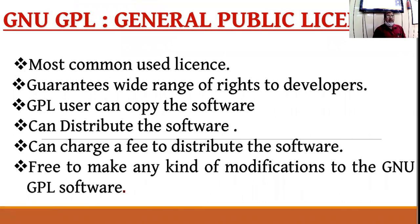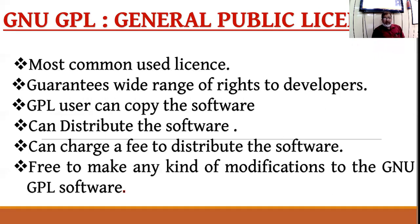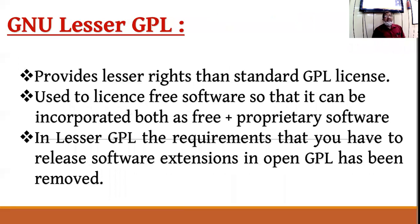The first license is GNU GPL - General Public License. This is the most popular license which provides a variety of rights to the user of open source software. The rights include: we can copy the software, distribute the software, charge fees for distribution, and since source code is available, we can make modifications also.